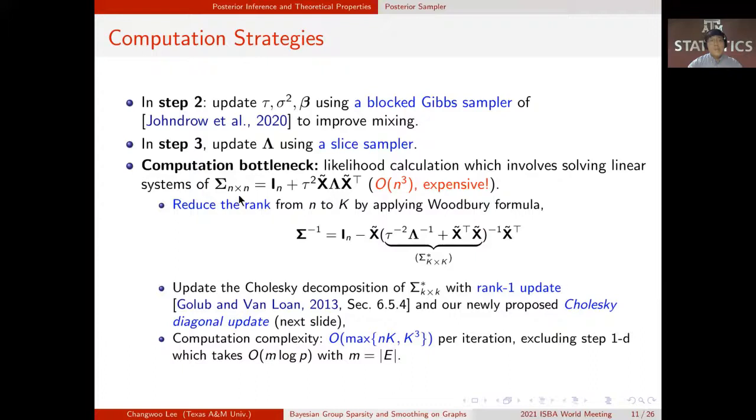Compared to the direct calculation, which takes O(n^3), we can reduce the computational cost by applying Woodbury formula as follows. Using the Cholesky decomposition of K by K matrix sigma star with rank 1 update and our newly proposed Cholesky diagonal update, we reduce computational complexity, which is linear of n.